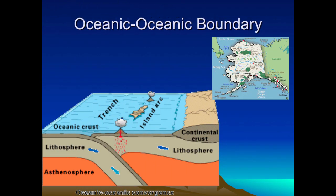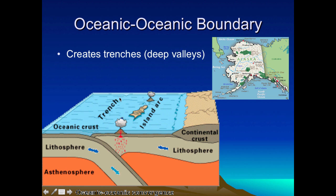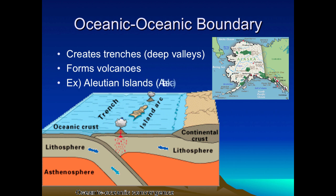Oceanic-oceanic collision is when two oceanic crusts collide. Notice how much thicker continental crust is compared to oceanic — oceanic is a very thin, dense layer, while continental is thick. When two oceanic plates push together, it can create trenches, which are very deep valleys at the bottom of the ocean, and can also form volcanoes like the Ring of Fire, found all along the Pacific, and the Aleutian Islands up in Alaska.